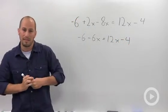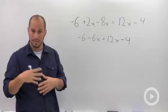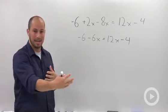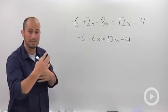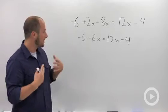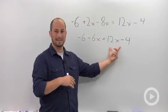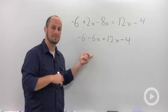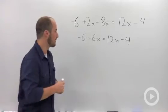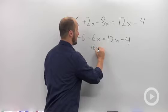OK. We then want to isolate our variable. So what that means is get all the x's together on one side. We can either bring them to either side. It works either way. In general I prefer to keep my x's positive so I would add the 6x over. You could just as easily subtract that 12.